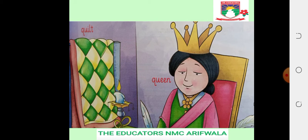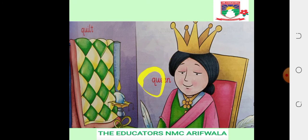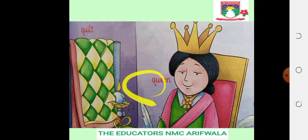The first thing is queen. The first word is queen, which means queen. Its spellings are Q, U, double E, N. The first two letters of queen are Q and U.